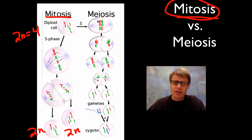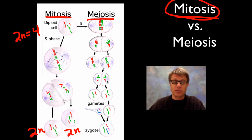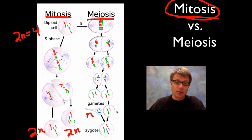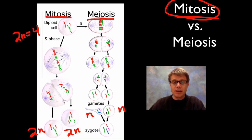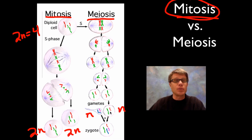What's meiosis then? Meiosis starts the same way — we start with a diploid cell and copy the DNA — but instead of splitting it in half once, it splits in half twice. We also have crossing over that occurs. So instead of getting duplicate cells, we get haploid cells that have half the genetic information, and chromosomes that are a combination of the parent cell's chromosomes.